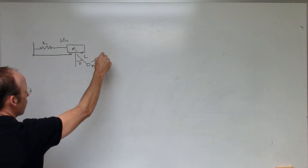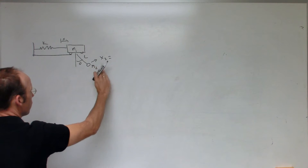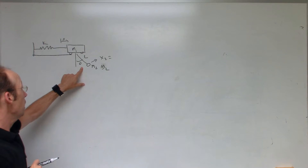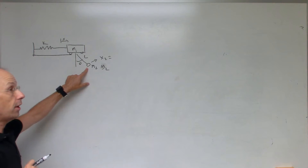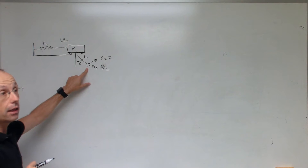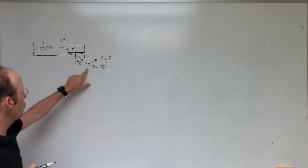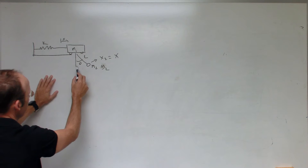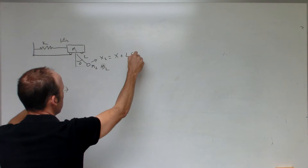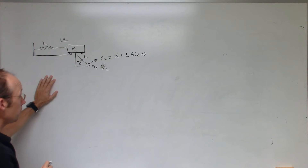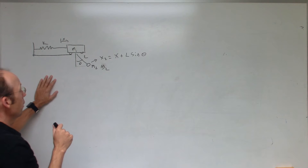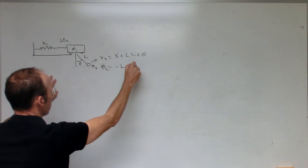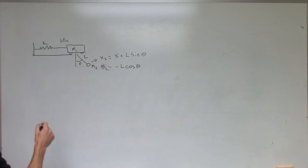I need to find x₂ and y₂ to find the kinetic energy of this mass. The only way to do that is to find real x and y coordinates and take derivatives to find the velocities. The x₂ coordinate is just going to be x plus l sine theta — we did that with our pendulum before. The y₂ component is going to be equal to negative l cosine theta; it doesn't depend on x.